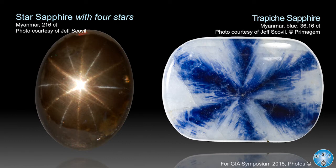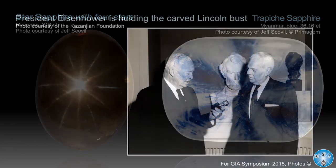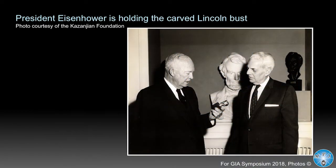Trapiche sapphire — spectacular picture. You probably know it's on the cover of Richard Hughes' ruby-sapphire book. It's this fixed segmentation in blue and white — a big stone, very beautiful. President Eisenhower, who won the Second World War, had this carved Lincoln bust made for him. This is one of the so-called president heads carved in star sapphire from the Australian Anakie gem fields. There are four or five presidents carved from this material, and they're all located in the Oval Office. Under the Reagan administration they were moved there by the Kaisanian Foundation.